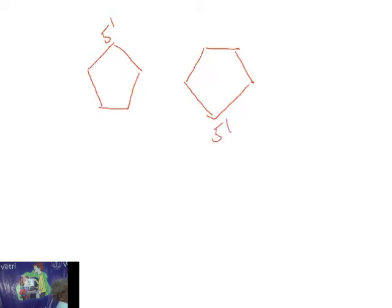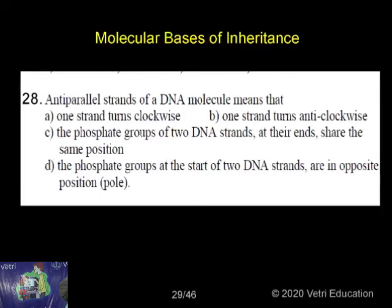The position of the sugar molecules decides the anti-parallelism. The phosphate groups at the start of the two DNA strands determine this.